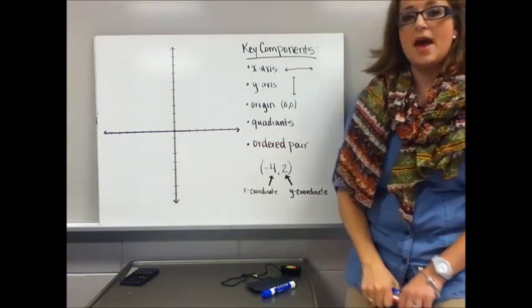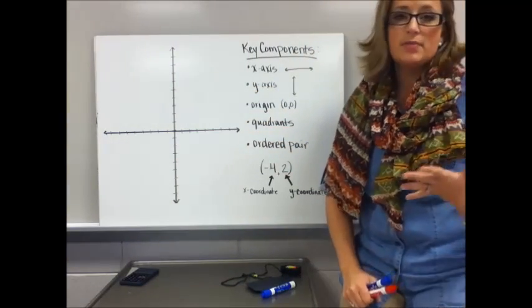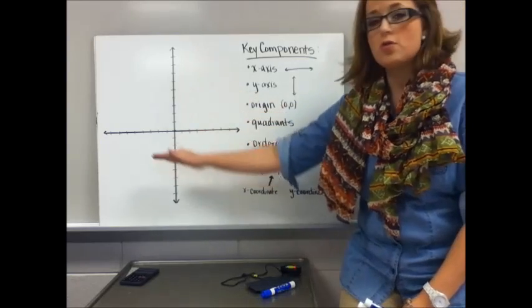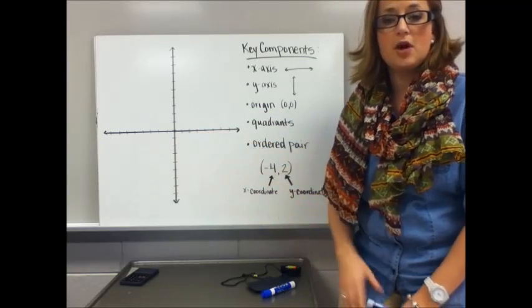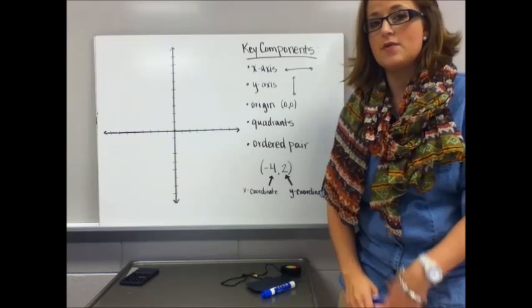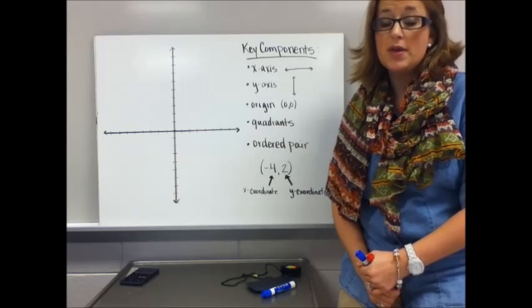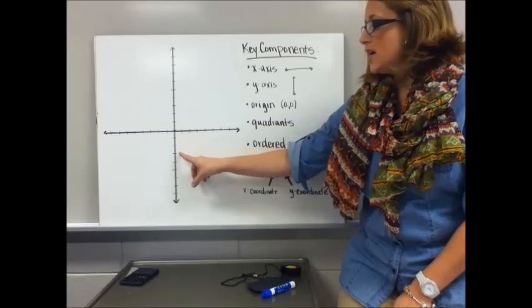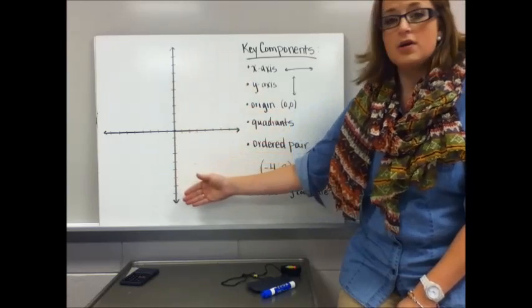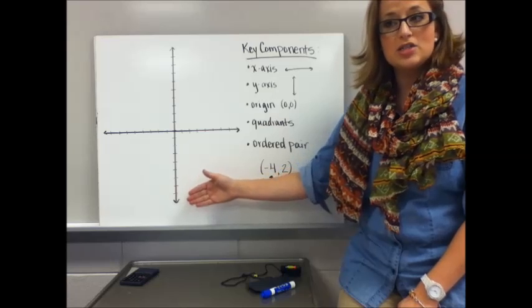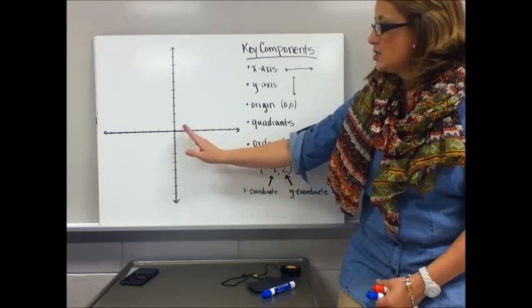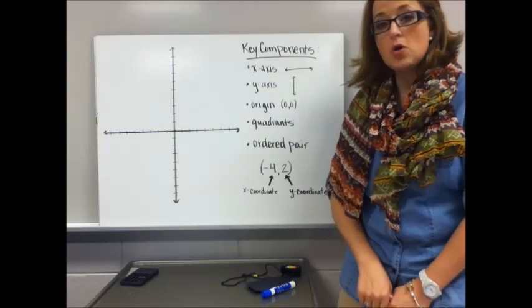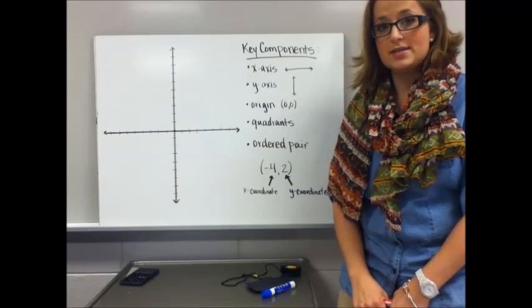Go ahead and draw that coordinate plane. It doesn't have to be perfect. You don't have to have graph paper, but do try to use a straight edge to draw your axis. Use another piece of notebook paper, the edge of a notebook. Try to make your tick marks even. On notebook paper for your vertical axis, your y-axis, you can use the lines on your notebook paper and then just try to eyeball it to make your x-axis even. Go ahead and pause the video to finish drawing your axis.